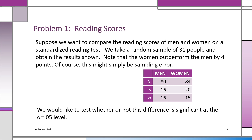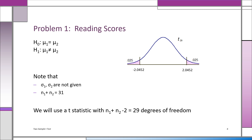In problem one, we're comparing the reading scores of two groups, men and women. The women's average score is 84 compared to 80 for the men — a four-point difference. The question is whether that difference is significant or might just be chance or sampling error. Notice the sample sizes are 16 and 15, giving 29 degrees of freedom. You cannot use Z since you don't know sigma, so you're going to have to use T, a two-sample t-test. H0 is that μ1 equals μ2 — no difference. H1 is that μ1 is not equal to μ2.